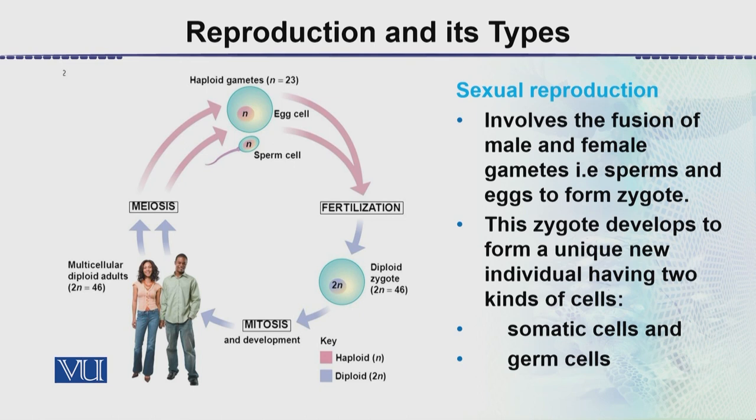Next is sexual reproduction. Sexual reproduction involves the fusion of gametes — gametes are the reproductive cells produced in the reproductive organs. These gametes are fused together to form a single cell: one cell comes from one parent, the other from the other parent, and they fuse together.